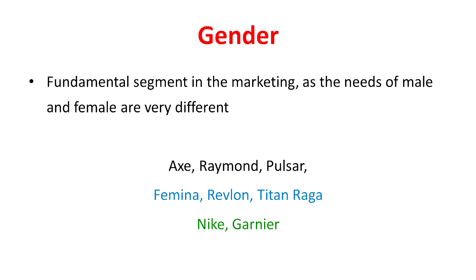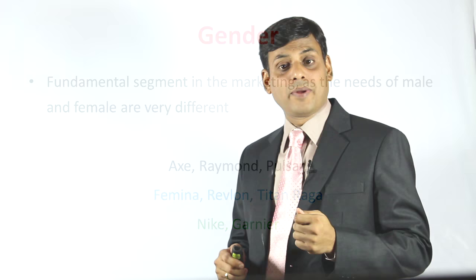The third concept is gender. Gender differentiation forms a fundamental segment in marketing, as the needs of male and female are very different. Whether you talk about clothing, apparels, cosmetics, or magazines, gender makes all the difference in creating its own market. Brands like AXE, Raymond, and Pulsar are targeted towards males, while Femina, Revlon, and Titan Raga are targeted towards females. Few brands like Nike and Garnier target both genders through their different products or sub-branding.